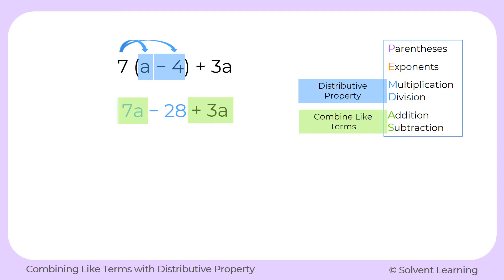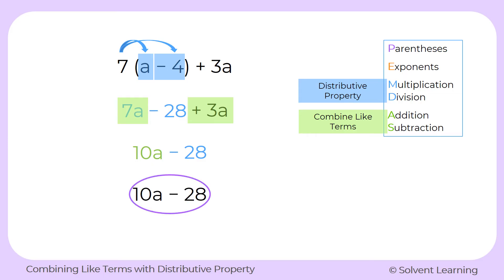So all we have to do is add 7a and 3a together, which gives us 10a. And then we bring down the minus 28. There's nothing else to combine that with, so it just stays as it is. Our final answer is 10a minus 28. We took that whole big long expression and just by using distributive property and combining like terms, we simplified it to just 10a minus 28.